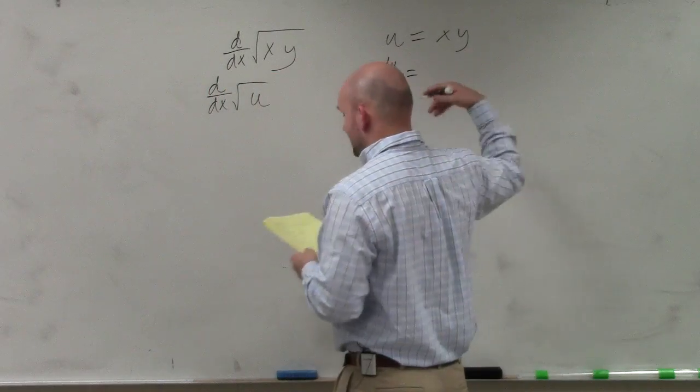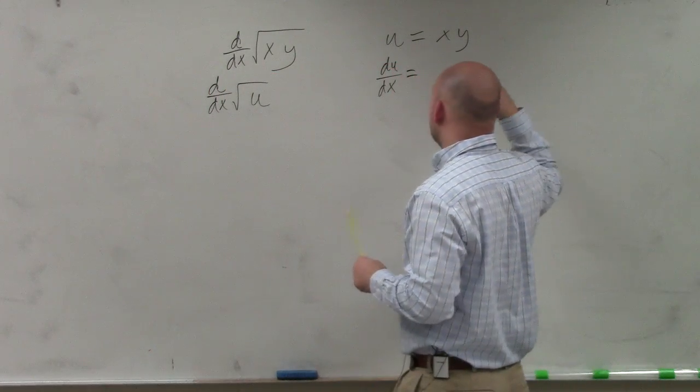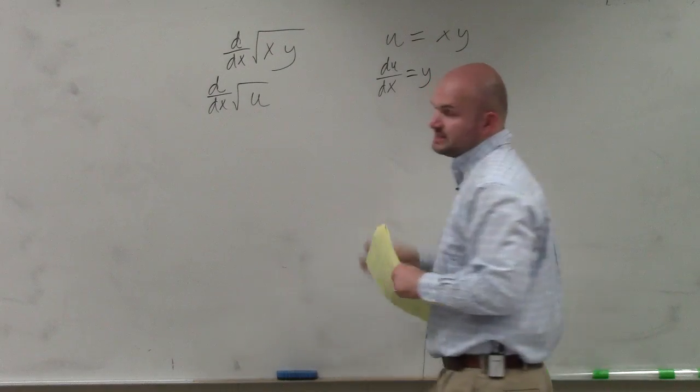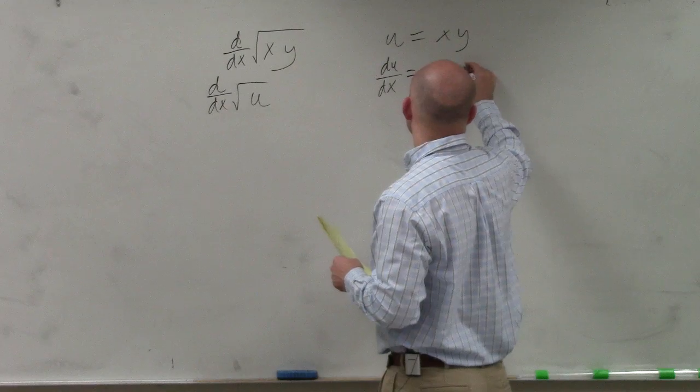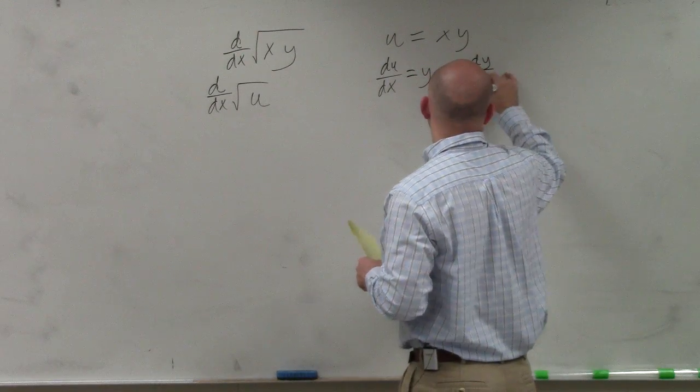So du over dx. Again, it's the exact same as doing as when we did the product rule in the last problem. So you're going to have y plus x dy over dx.